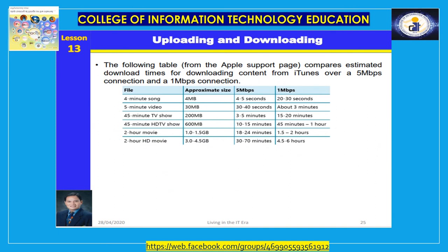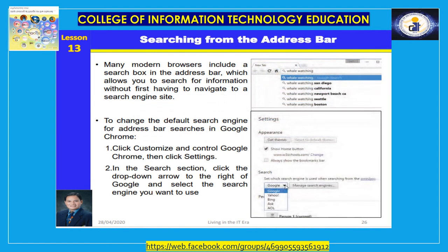A table from the Apple support page compares estimated download times for downloading content from iTunes over a 5 Mbps connection and a 1 Mbps connection. Regarding streaming — the process of having a file delivered to your device in a constant and steady stream — although you cannot save streamed content, streaming can be preferable to downloading when you want to watch high-definition movies or TV shows. If you download the content, you may wait several hours before viewing, whereas streaming allows you to begin watching immediately.